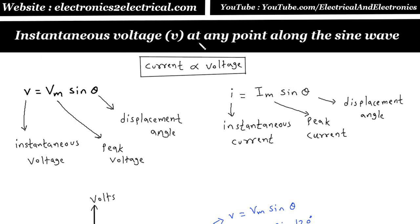Instantaneous voltage at any point along the sine wave. Here is the formula for instantaneous voltage. Instantaneous voltage is denoted by small v. This is peak voltage, which is denoted by capital V sub M, sine theta. Theta is displacement angle.